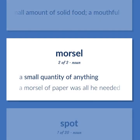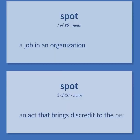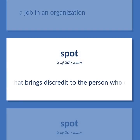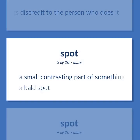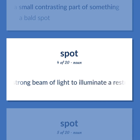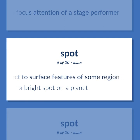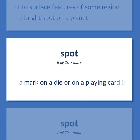Spot: A small quantity of anything. A morsel of paper was all he needed. A job in an organization. An act that brings discredit to the person who does it. A small contrasting part of something. A bald spot. A lamp that produces a strong beam of light to illuminate a restricted area, used to focus attention on a stage performer. A point located with respect to surface features of some region. A bright spot on a planet. A mark on a die or on a playing card, shape depending on the suit.